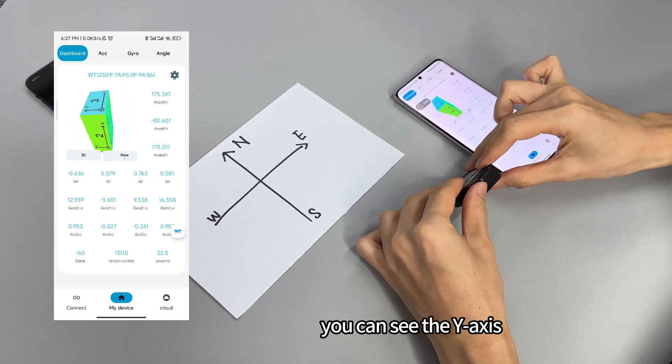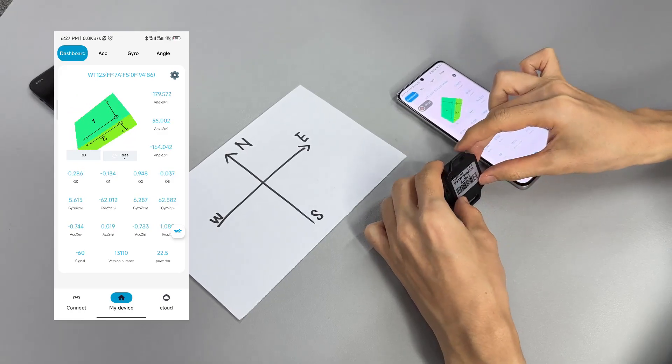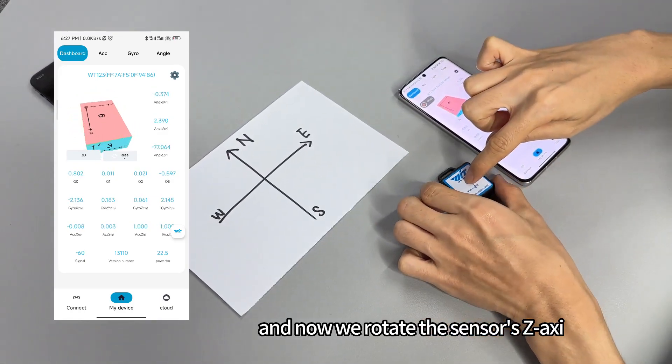You can see the Y axis is changing. Now we rotate the center Z axis.